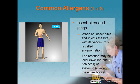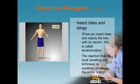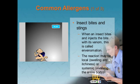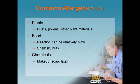The most common allergens fall into five categories. First, insect bites and stings: when an insect bites and injects venom, this is called envenomation or more commonly a sting. The reaction can be local, causing swelling and itchiness in the surrounding tissue, or it may be systemic, involving the entire body, which is called anaphylaxis. Penicillin injection may cause an immediate and severe allergic reaction, often within 30 minutes; oral penicillin may take longer but causes an equally severe reaction. A person will typically experience an allergic reaction after becoming sensitized by the first exposure. Plants, dust, pollens, and other plant materials can cause a rapid and severe allergic reaction. Food reactions can be relatively slow, more than 30 minutes, and examples include shellfish and nuts. Chemicals include examples such as makeup, soap, and latex.